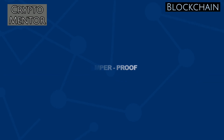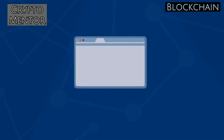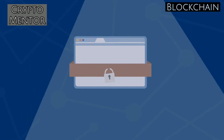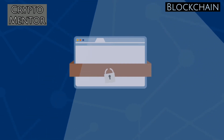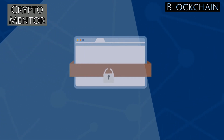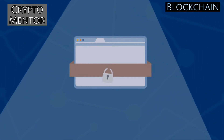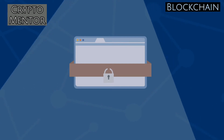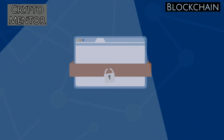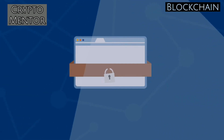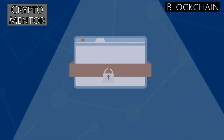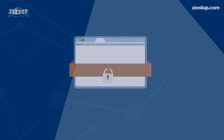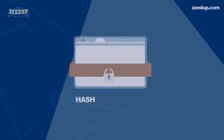Tamper-proof — with the property of immutability embedded in blockchains, it becomes easier to detect tampering of any data. Blockchains are considered tamper-proof, as any change in even one single block can be detected and addressed smoothly.